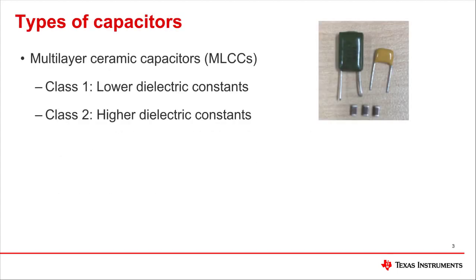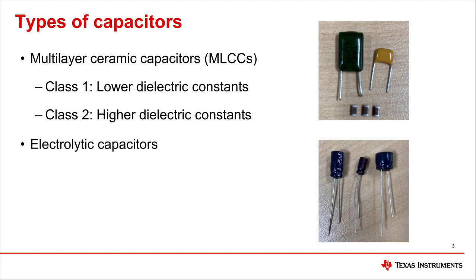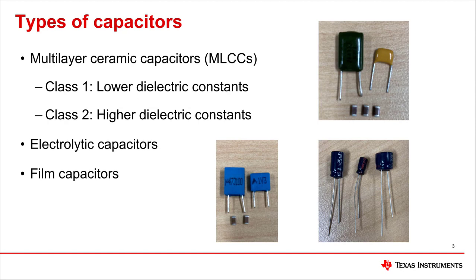The most popular capacitors are ceramics, which use high dielectric materials to get the majority of their capacitance along with a multi-layer structure, so they are often abbreviated as MLCCs and are divided into two classes. These are followed by electrolytic capacitors that make use of the oxides of metals like aluminum and tantalum, along with a curled plating structure to create capacitance, making the majority of them appear as cylindrical towers. Then there are film capacitors, which are much like ceramics in terms of structure but are often bulkier due to the lack of high dielectric materials.